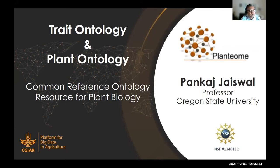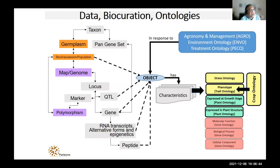This is Panket Jiswo from Oregon State University. I will be talking about the trait ontology and plant ontology as a common reference resource for plant biology. There are many datasets available for the plant genomics and genetics community, including maps, genomes, loci, QTLs, genes, and markers. Many of these features are associated with characteristics recorded as ontology descriptors, including anatomy, growth stages, subcellular and molecular events, phenotypes, and traits measured in response to agronomic practices or environmental conditions.